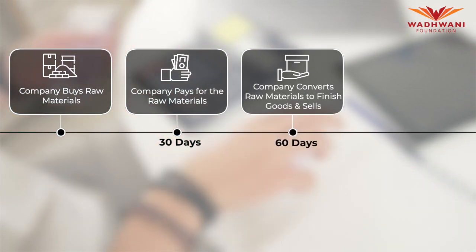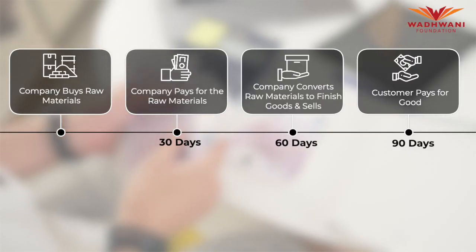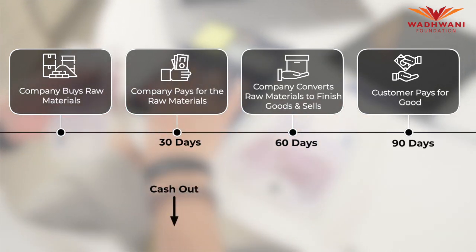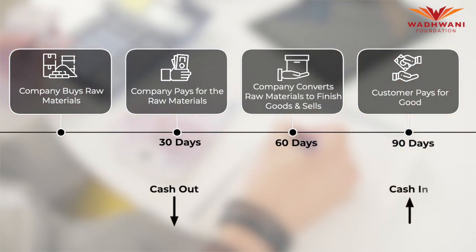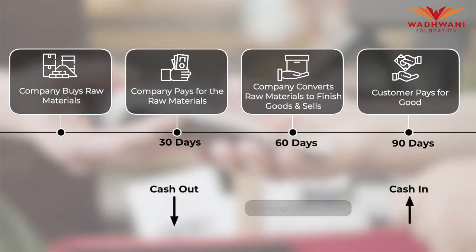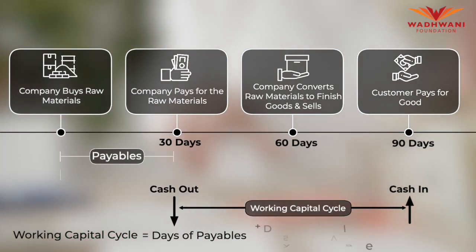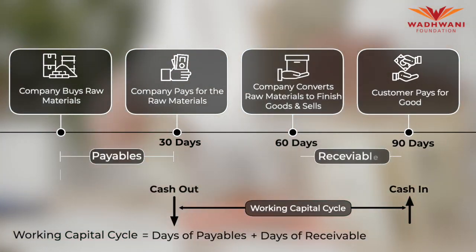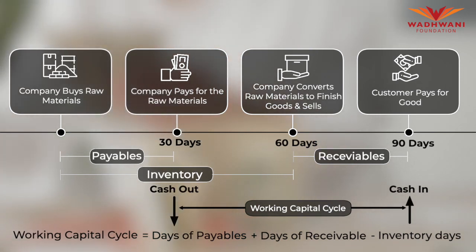On day 60 you sell your finished goods to your customer, who says they'll pay after 30 days. So the cash that went out of your system on day 30 returns back on day 90 when your customer pays. This 60-day gap is your working capital cycle. The way to calculate it is: days of receivables plus days of inventory minus days of payables — so 90 plus 60 minus 30 equals 60 days working capital cycle.